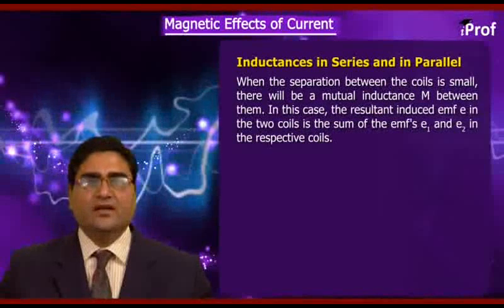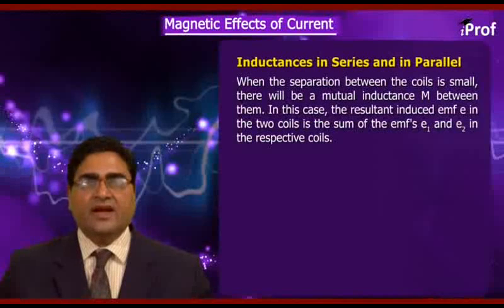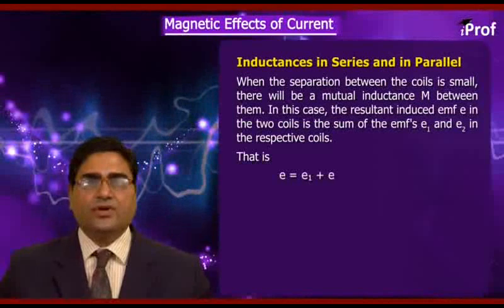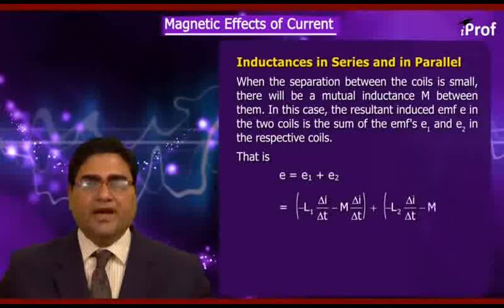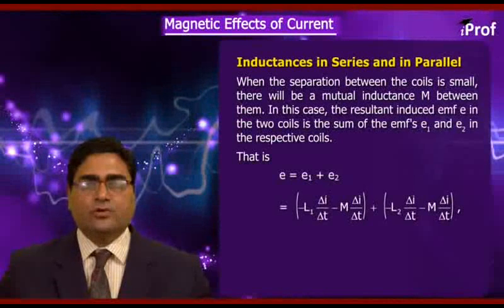In this case, the resultant induced EMF E in the two coils is the sum of the EMFs E1 and E2 in the respective coils. That is, E = E1 + E2 = [−L1(ΔI/Δt) − M(ΔI/Δt)] + [−L2(ΔI/Δt) − M(ΔI/Δt)].